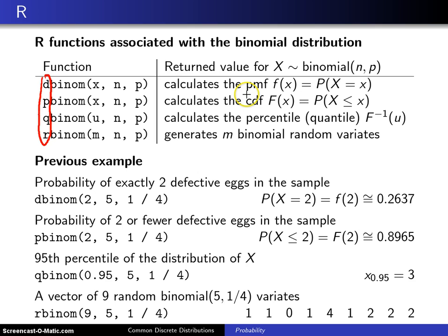p will give you the cumulative distribution function, capital F of x. q will calculate a percentile of the distribution. I give that as f inverse of u. Notice it has a u parameter up front here. And finally, r binom will generate m, the first parameter, binomial random variates.